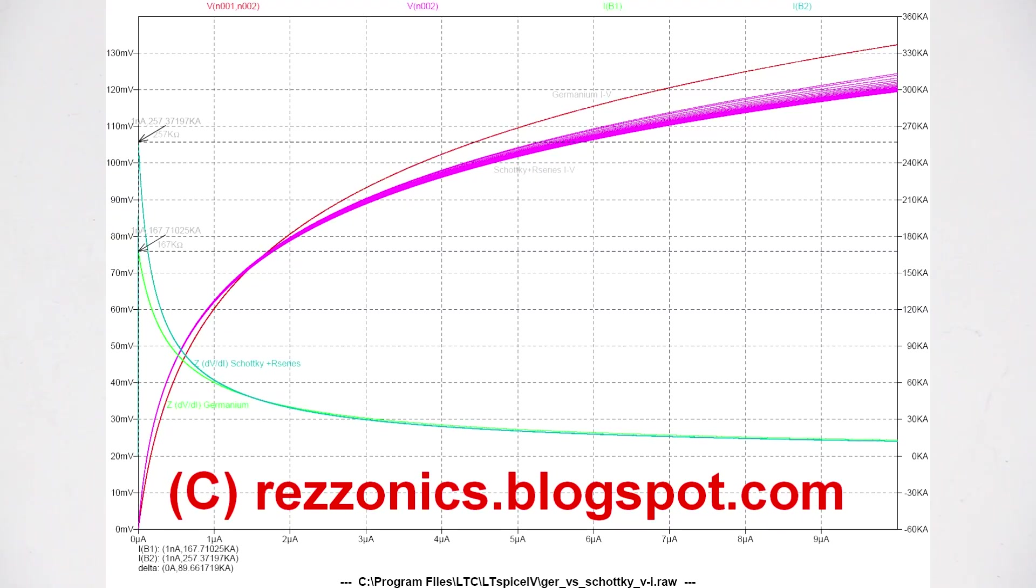The characteristic curve of Schottky and germanium diodes are nearly the same, and you can only discern them by measuring the reverse current where they differ substantially.